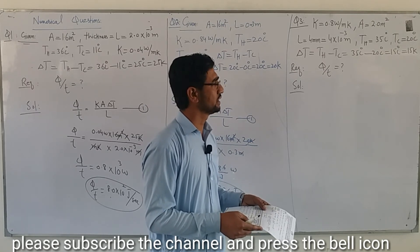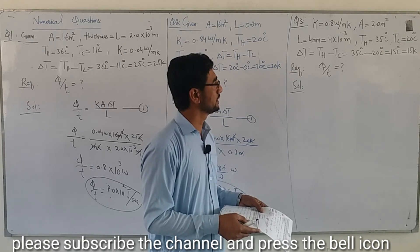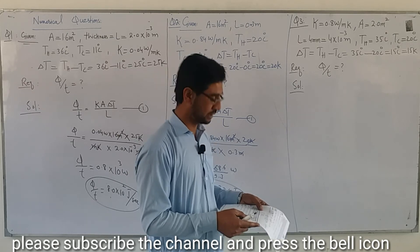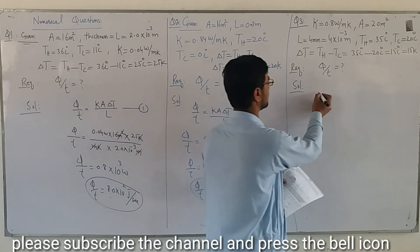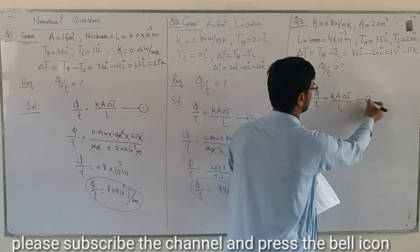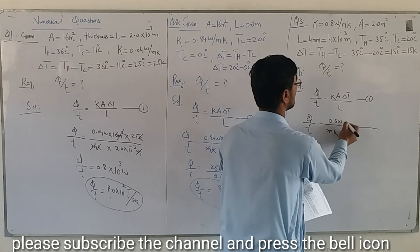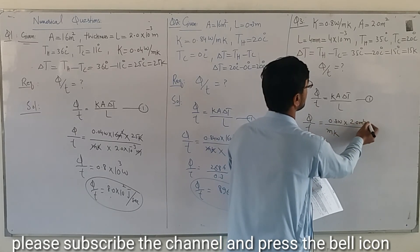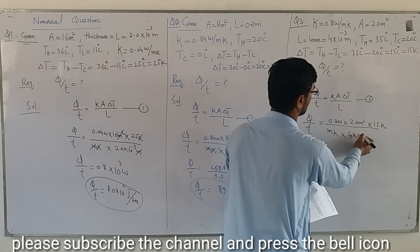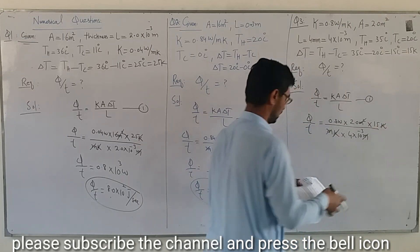Problem 3: Outside temperature is 35 degrees, inside room temperature is 20 degrees, so ΔT equals 15 Kelvin. Using Q/t equals kAΔT divided by L: k equals 0.8 watt per meter per Kelvin, area equals 2.0 meter square, delta T equals 15 Kelvin, and length equals 4×10⁻³ meter.